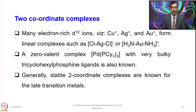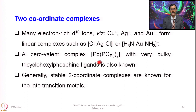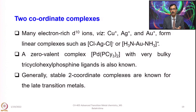For coordination number 4, they can have tetrahedral or square planar geometries. Looking at 2-coordinate complexes, many electron-rich ions — particularly those with D10 electronic configuration — prefer low coordination numbers. Copper(I), silver(I), and gold(I) all have D10 electronic configuration. The preference is always for 4-coordination in nickel, palladium, and platinum with D8 electronic configuration.